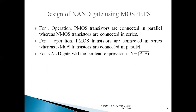For a NAND gate, the Boolean expression is Y = (A·B)̄. Since we have a dot operation, PMOS transistors are connected in parallel and NMOS transistors are connected in series. For a two-input NAND gate, we use two PMOS transistors connected in parallel and two NMOS transistors connected in series. PMOS transistors form the pull-up network; NMOS transistors form the pull-down network.